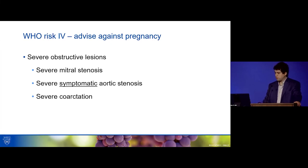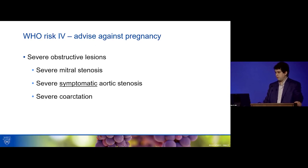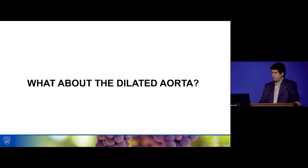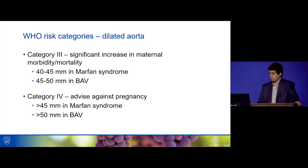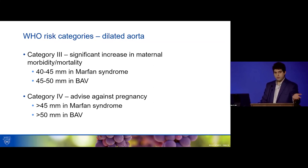WHO risk class four — where pregnancy is advised against — includes severe obstructive lesions: severe mitral stenosis, severe coarctation, and importantly, severe symptomatic aortic stenosis. In our patient, even if we called it severe AS, she was completely asymptomatic, so we decided to proceed. Regarding the dilated aorta — hers was 38 mm — WHO class three involves significant maternal morbidity if the aorta measures 40–45 mm in Marfan syndrome, or 45–50 mm in BAV. Class four advises against pregnancy if the aorta exceeds 45 mm in Marfan or 50 mm in BAV.